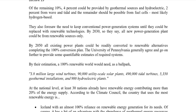To achieve 100 percent renewable energy for the entire world, you would need around 3.8 million large wind turbines, around 90,000 utility-scale solar power plants, approximately 490,000 tidal turbines, around 500 geothermal installations, and around 900 hydroelectric plants.